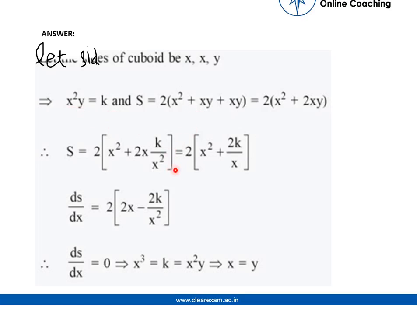So now we can easily differentiate it with respect to x. After differentiating we can see that x³ equals k, and k is nothing but x²y. So x equals y.